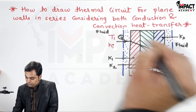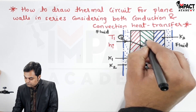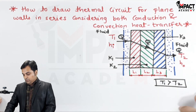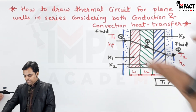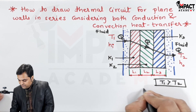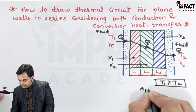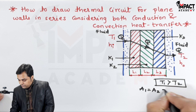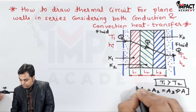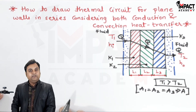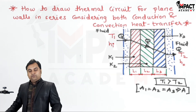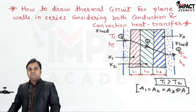This is the direction of heat flow. In order to draw the thermal circuit, the area of each wall is assumed to be the same: A1 = A2 = A3, denoted as capital A — the common area perpendicular to the heat flow direction. First, let's understand how many resistances are present.